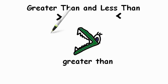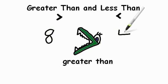If we have two numbers, say 8 and 4, this sentence is 8 is greater than 4, which means 8 is bigger than 4, 8 is more than 4.